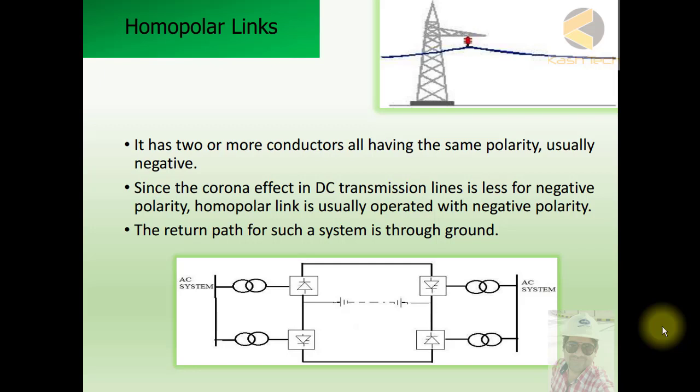Because with research we have found that negative conductors have lesser issues of corona, so instead of positive, negative conductors are used on this DC transmission line for homopolar links.